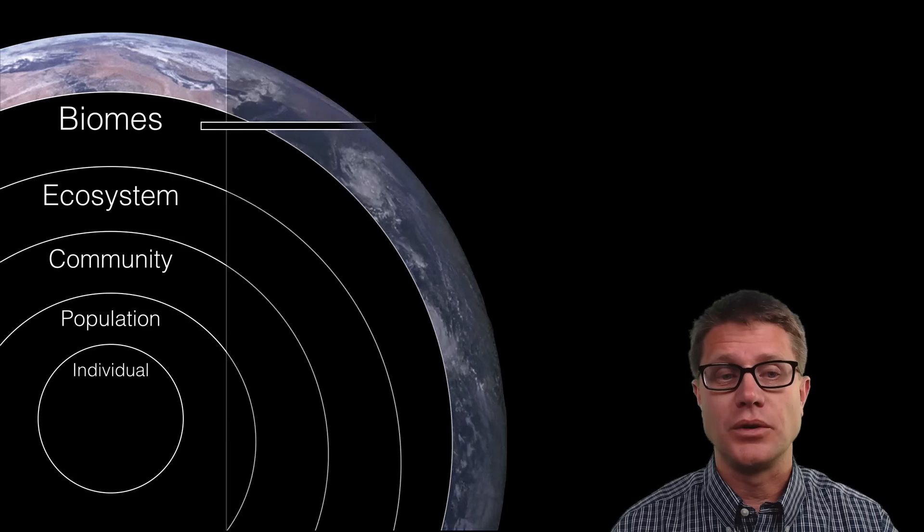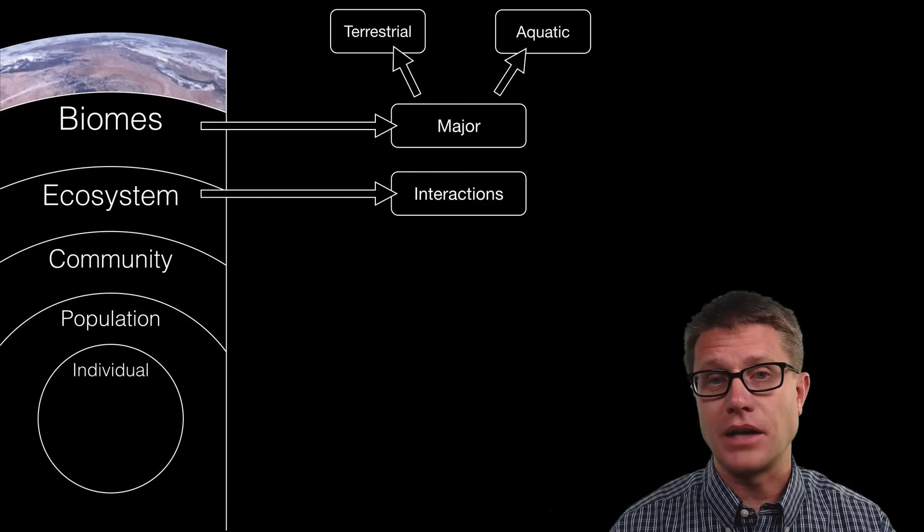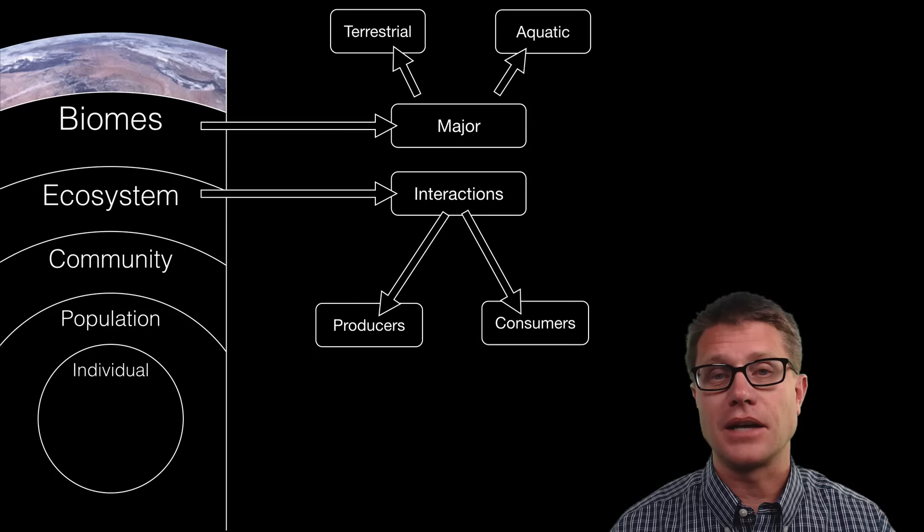Before we get to ecosystems we will start by studying the major biomes, both terrestrial or land-based and aquatic, those in the water. We will then move on to the interactions at the ecosystem level. So that is going to be all of the producers and consumers interacting. A good way to study that is going to be with their food webs. We are also going to add abiotic or non-living material.